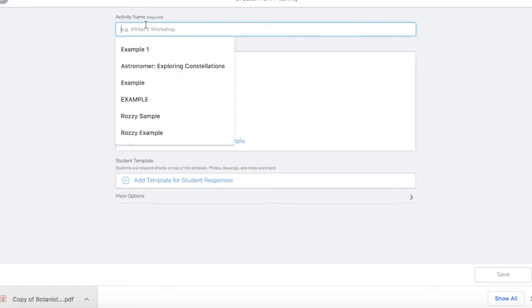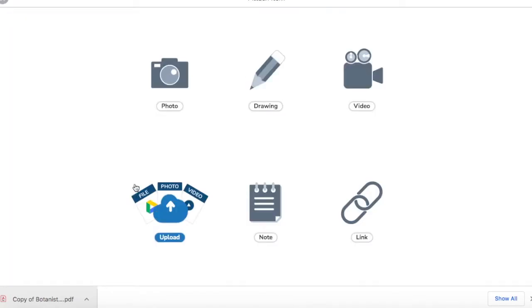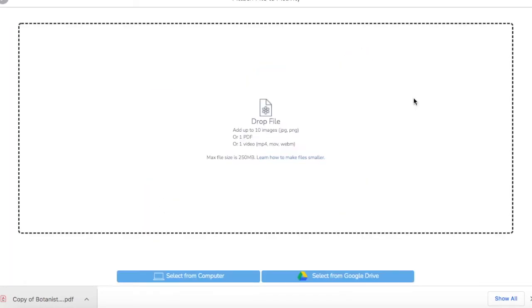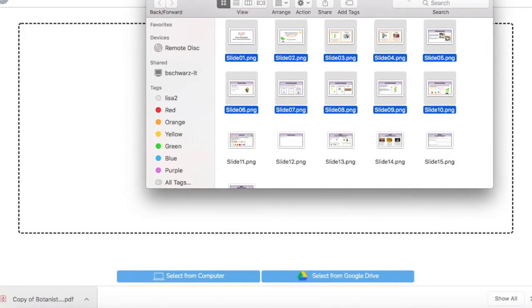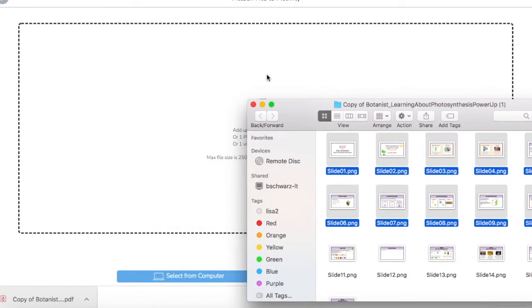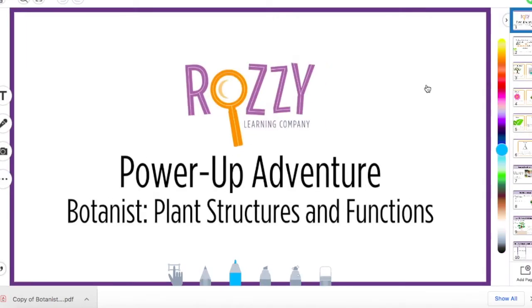Create new activity and then add template for student responses. I am going to give it a name. So we will do Rossi sample, add template for student responses and then I am going to do upload. I clicked the wrong one. Here is my PDF. It is uploading. And there it is.